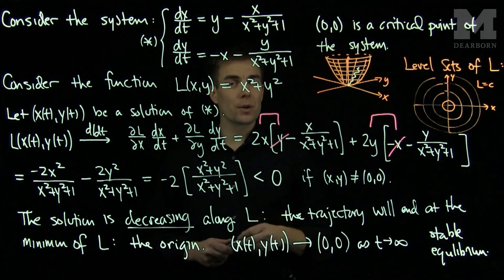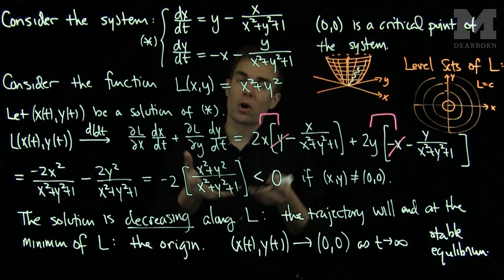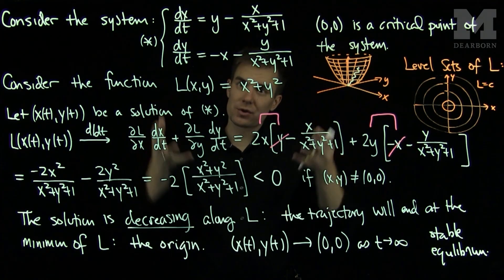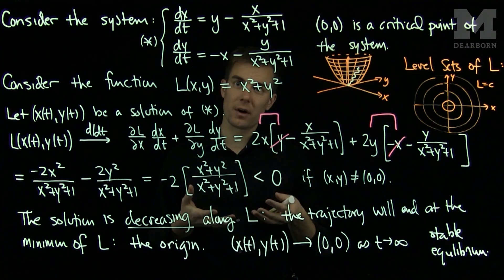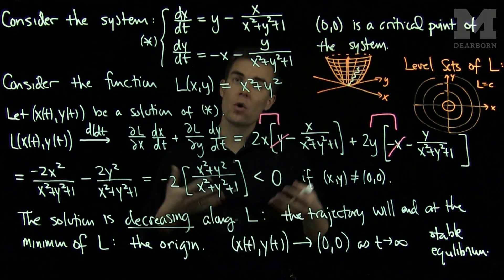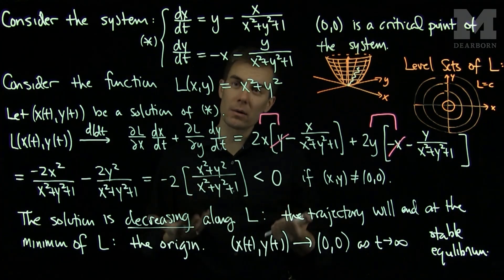So if we're able to construct a function that has a minimum value at the origin, that is always positive, and for which the solution along those trajectories is decreasing along the level sets of this function, called the Lyapunov function, we can conclude that the origin is asymptotically stable without linearization or without explicitly solving the problem.